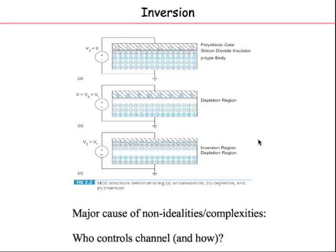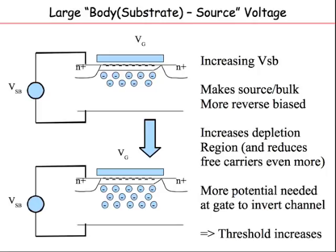One of the major causes of these non-idealities is to understand who controls the channel — who controls the formation of the inversion layer. Ideally you want only one person, the gate, to control it. But in reality there are other players who come in and mess up things, and that really complicates the picture. Let us take the first: the impact of the body voltage.